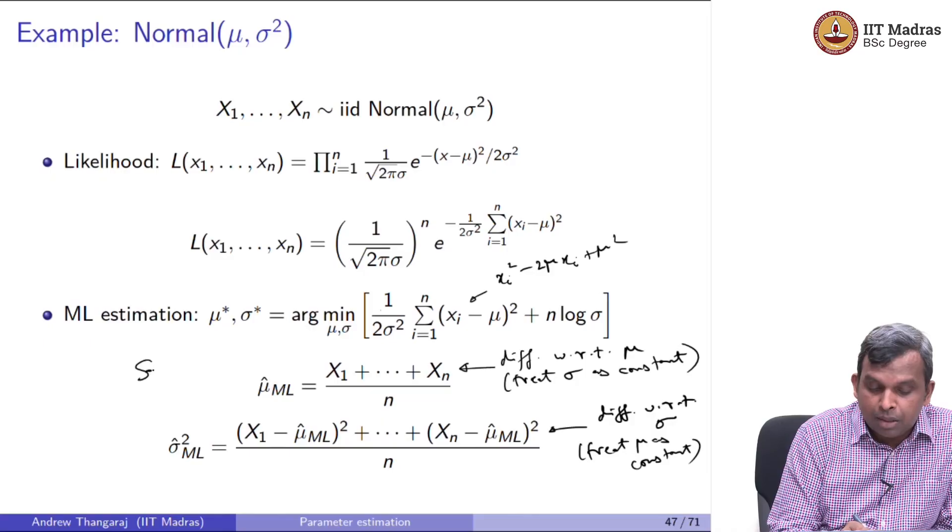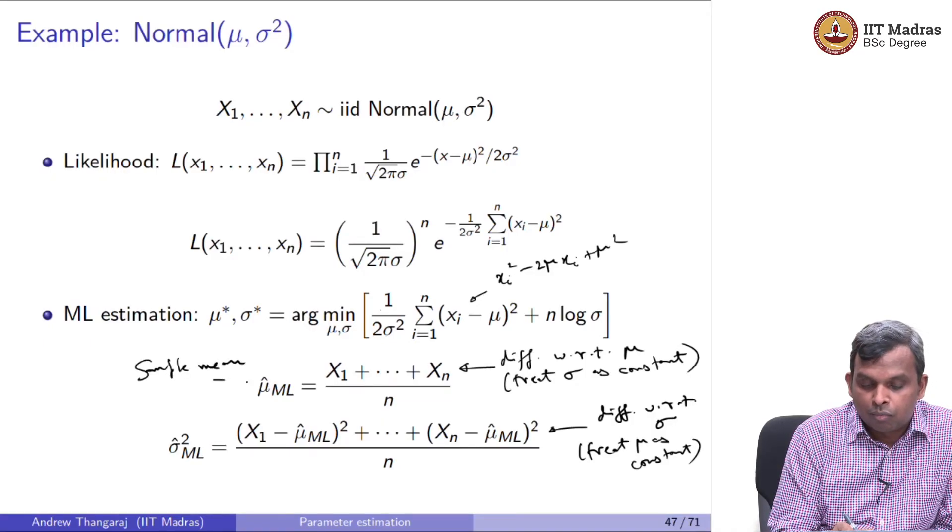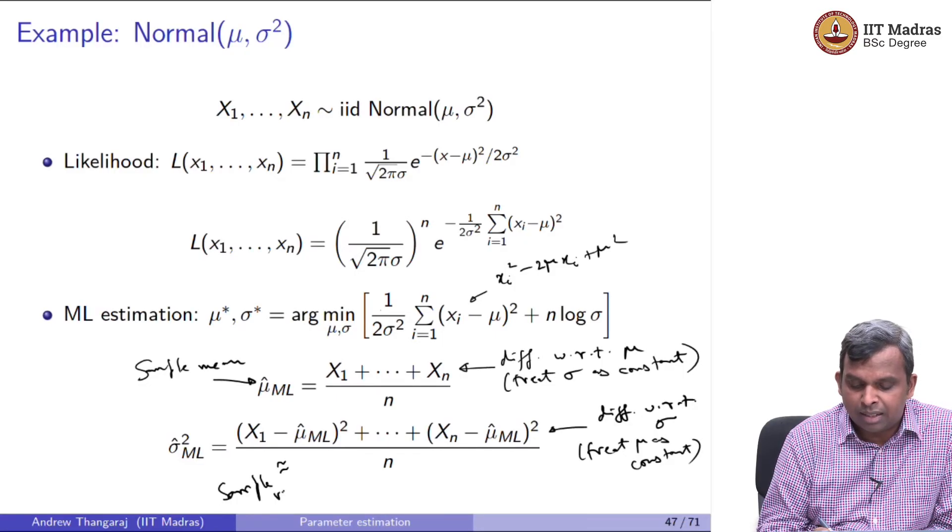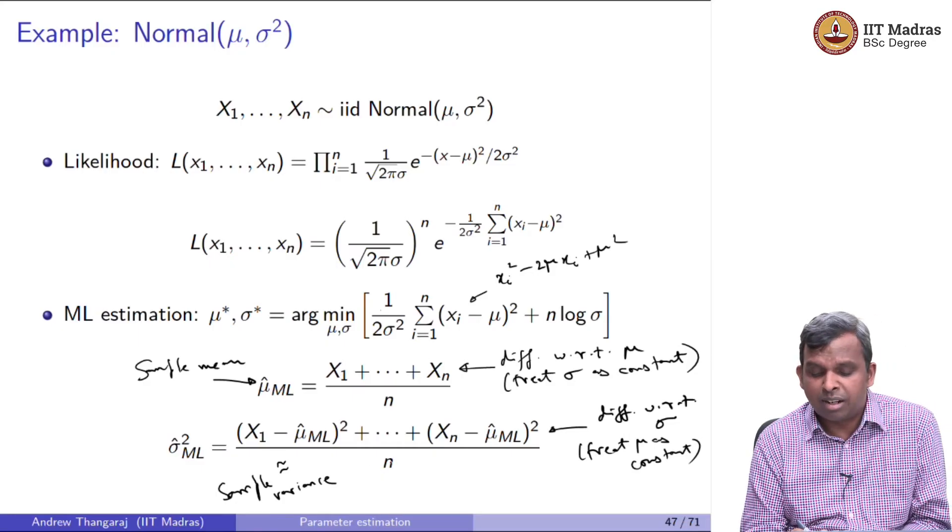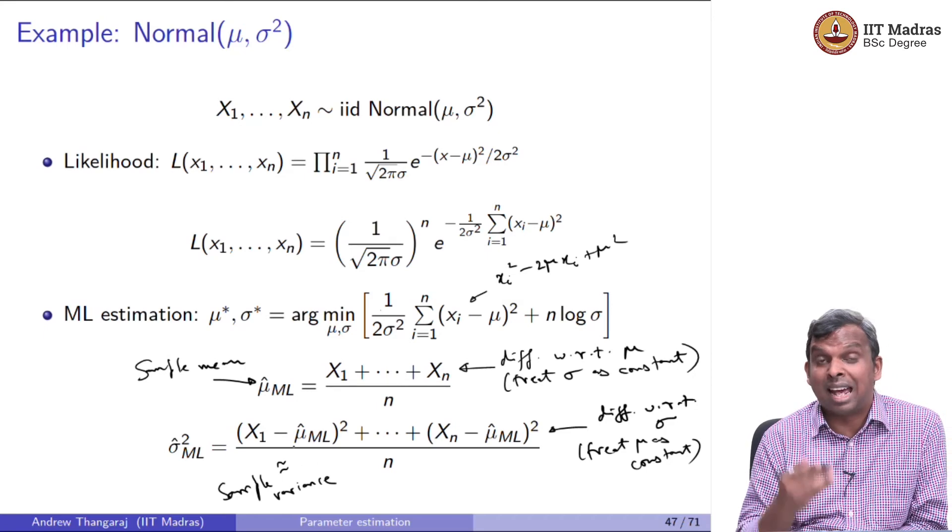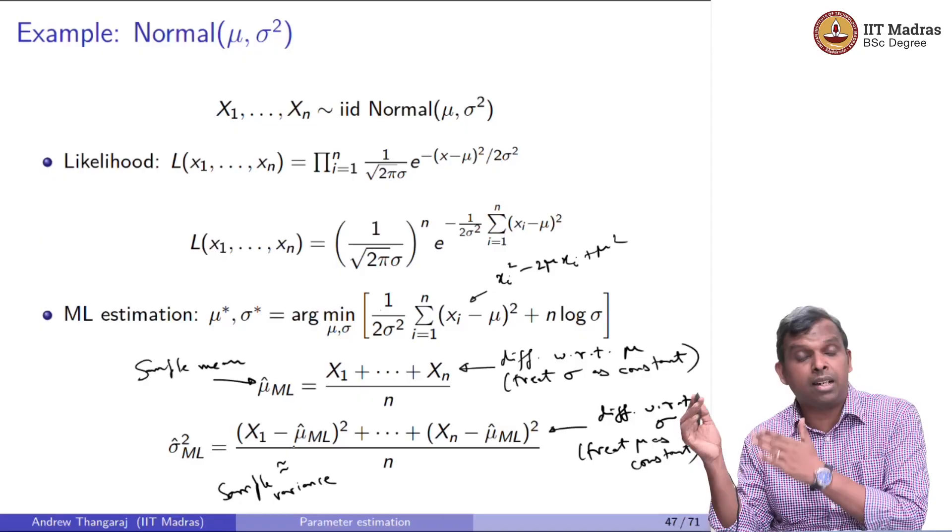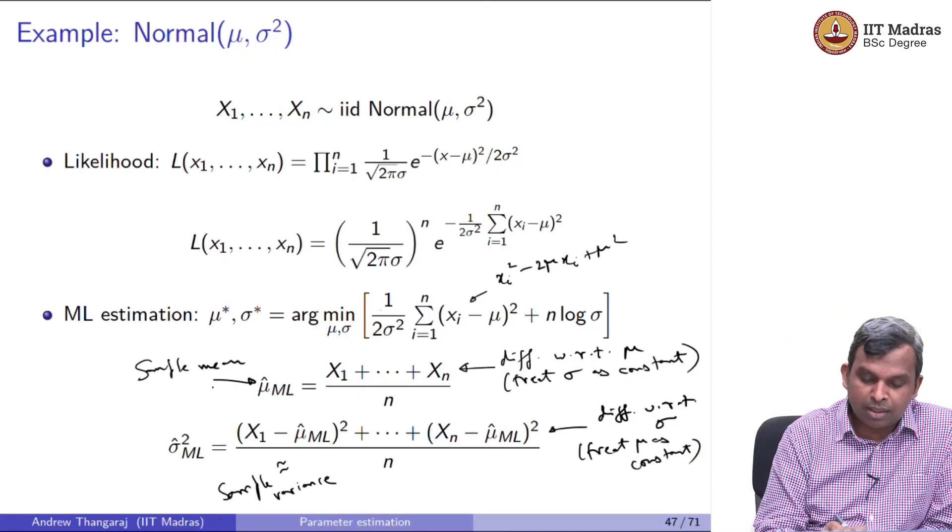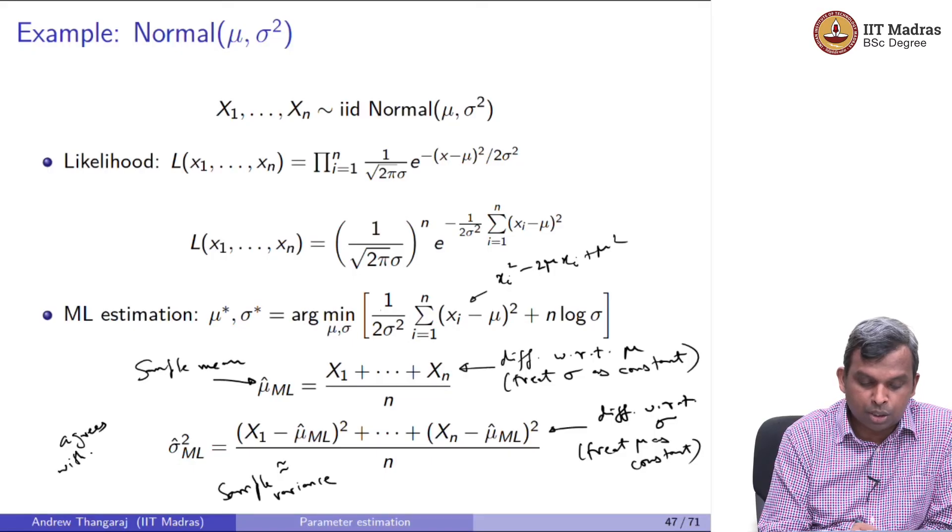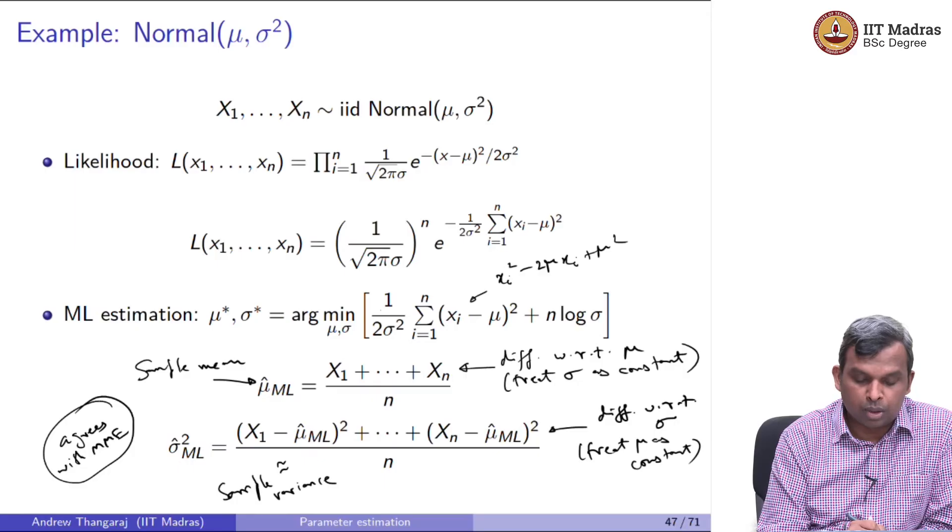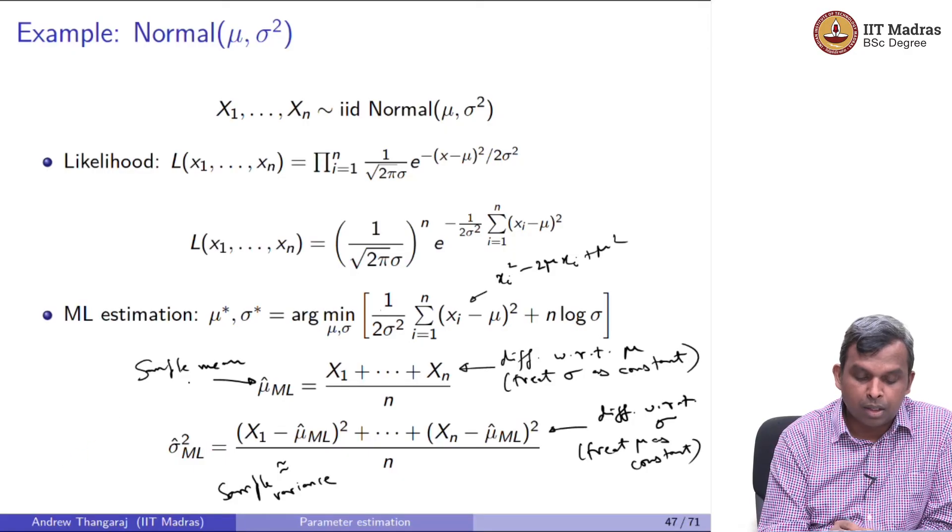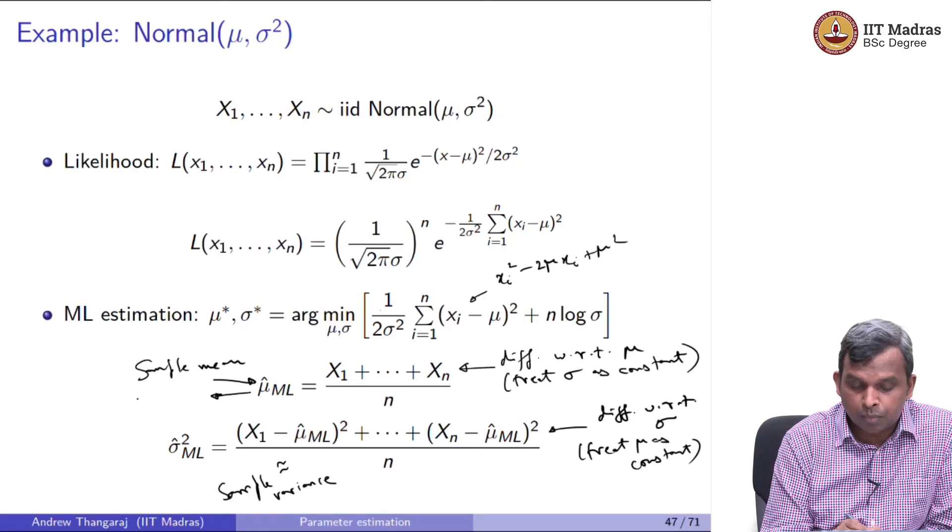These are again just blindly follow the recipe and we got very intuitive, clear answers. Because this is the sample mean, this is almost the sample variance. So sample variance, the only difference in the sample variance and this is the sample variance was divided by n - 1. In this case, it is divided by n, minor difference, but both are sample mean and sample variance, natural answers that we got by maximizing likelihood. And also this sort of agrees with method of moments estimation also, in some sense. At least this part agrees with MME, same as MME.